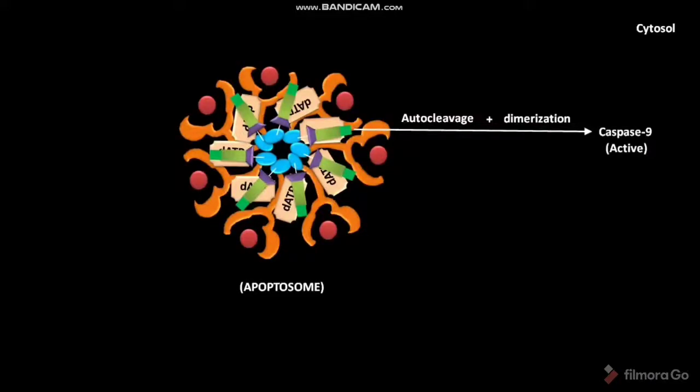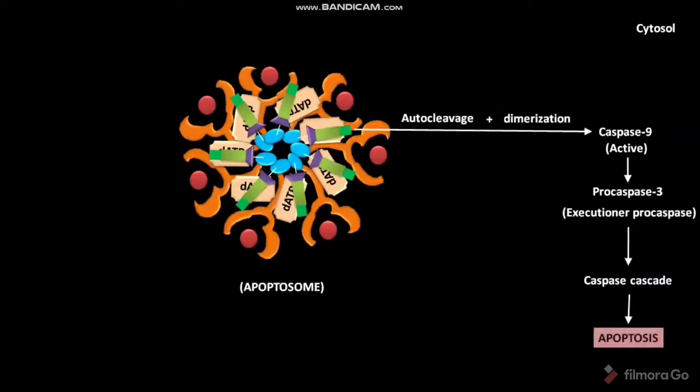The active Caspase 9 then activates Procaspase 3. Procaspase 3 is an executioner procaspase. This Procaspase 3 activation leads to a caspase cascade. Due to the caspase cascade, apoptosis occurs.